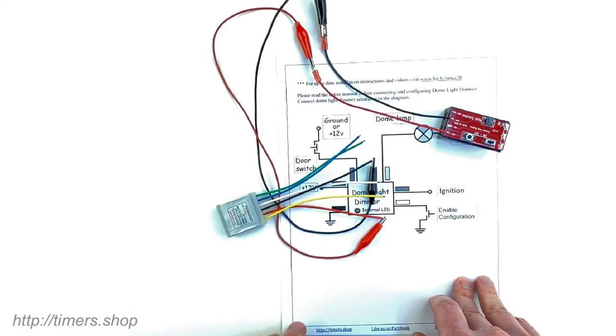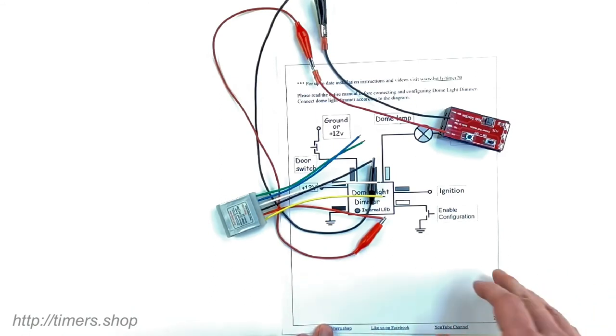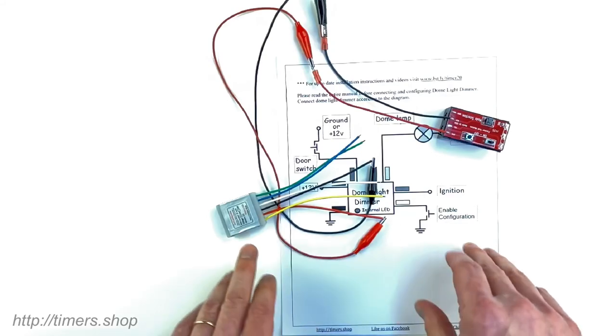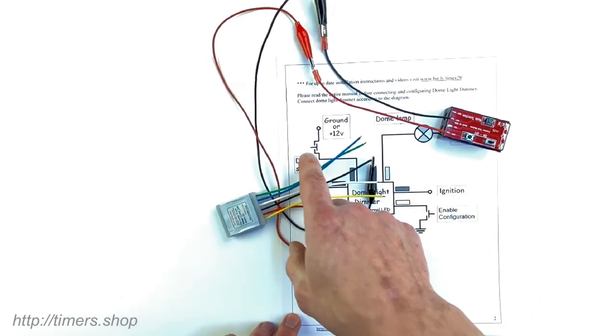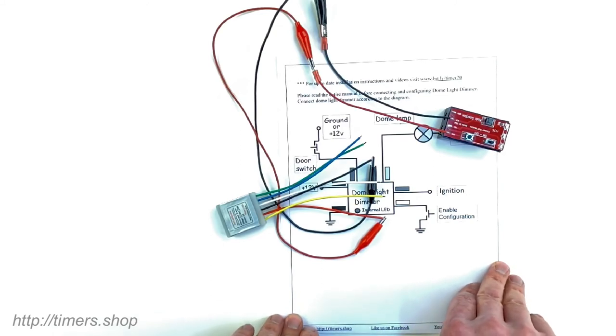If you put it in your dome light cavity, you might not have access to ground the white wire. So you can just activate the door switch multiple times and it will go into configuration mode also.